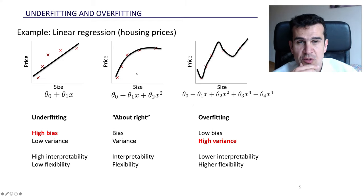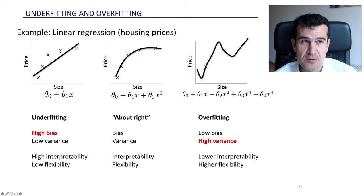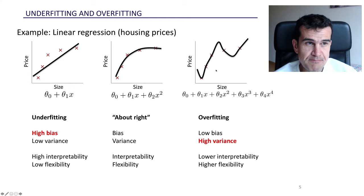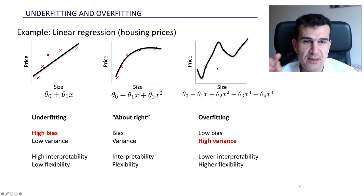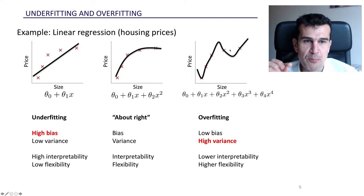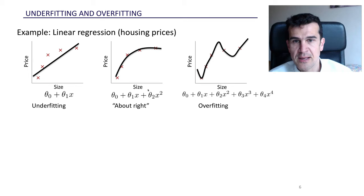So where's the sweet spot? It's somewhere in between. Models that are too simple can't capture the full pattern between input and output. One might be tempted to think that the more complex the model the better, but that is not right. A model that is too complex will fit the training data really well, but that's not what we want — we want to predict on new data. A model that is too complex is likely to overfit and will not make good predictions on new data.